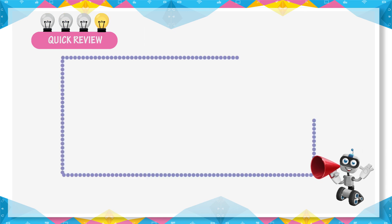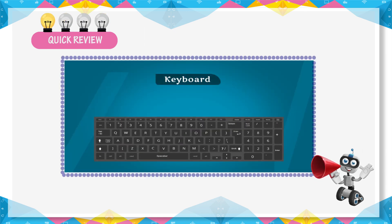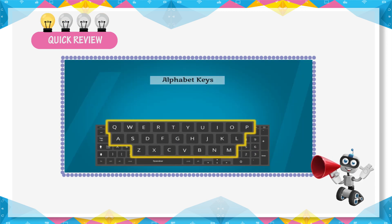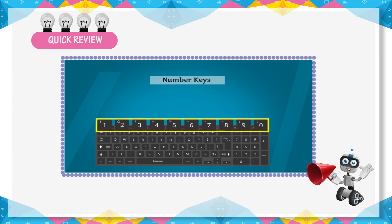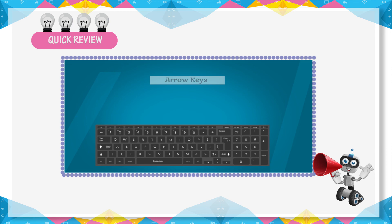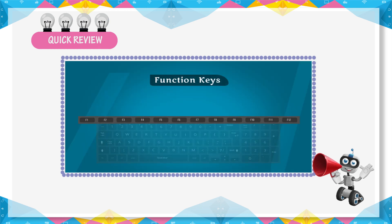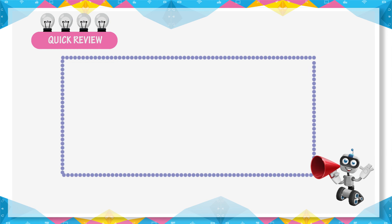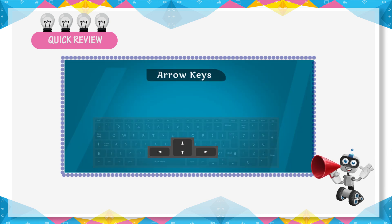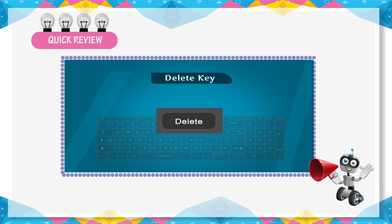Quick Review: Computer system में data enter करने के लिए keyboard का use किया जाता है। Keyboard में alphabet keys, number keys, function keys, arrow keys और special keys होती है। Keyboard पर buttons को keys कहते हैं। F1 से F12 तक 12 function keys होती है। Keyboard पर 4 arrow buttons होते हैं — cursor को up, down, left और right move करने के लिए। Delete key का use character को delete करने के लिए किया जाता है।